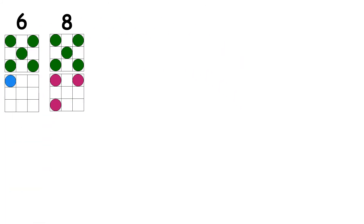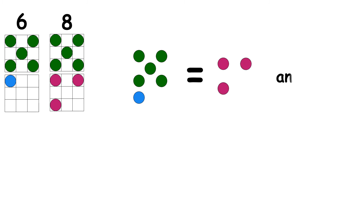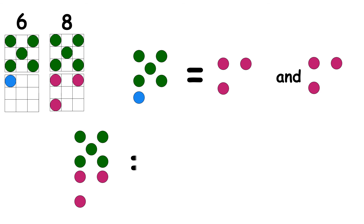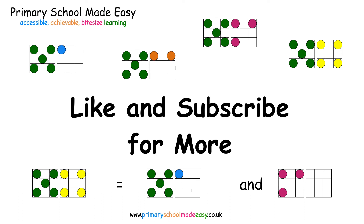And finally, 6 and 8 are special because they are even numbers and they can be broken down into 2 numbers that are the same. So 6 is the same as 3 and 3. And 8 is the same as 4 and 4. That's the partitioning for the numbers 6 to 9. Thank you for watching. Like and subscribe for more.